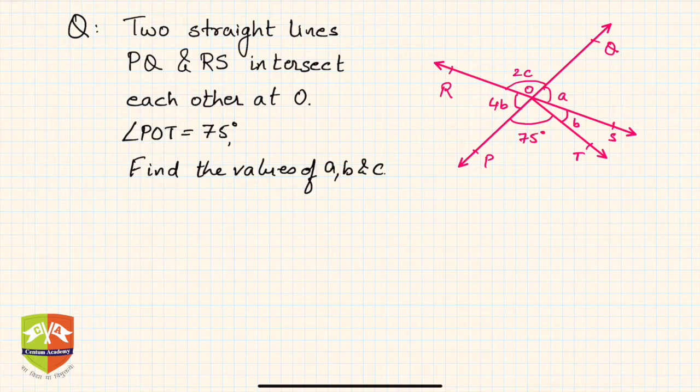Hi folks, we are back again with this problem-solving session on straight lines and angles. The problem given is two straight lines PQ and RS intersect each other at O. Angle POT is 75 degrees. You have to find out the values of a, b, and c.